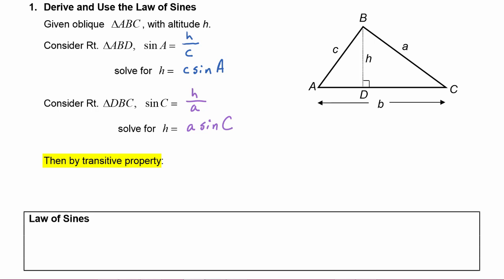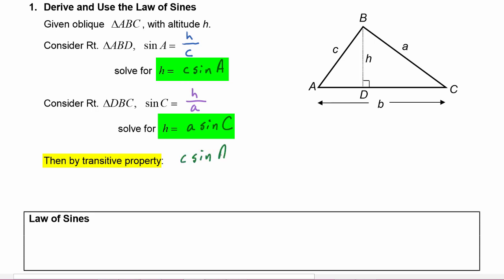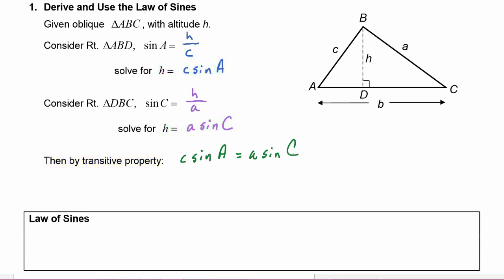By the transitive property, H equals c·sine A and H equals a·sine C. Since both are equal to H, we can set them equal to each other: c times the sine of A equals a times the sine of C. Cross multiplying gives us sine of A over little a equals sine of C over little c.